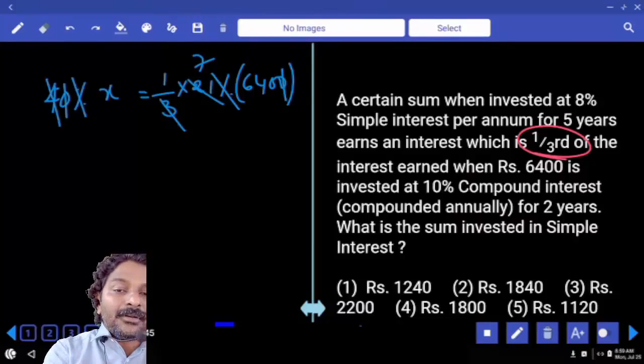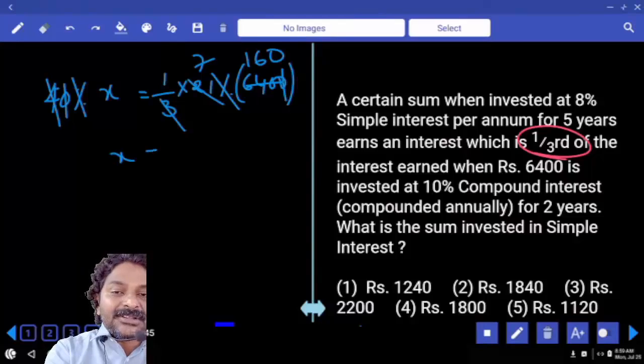6400 divided by 40 is 160, so x equals 7 times 160.